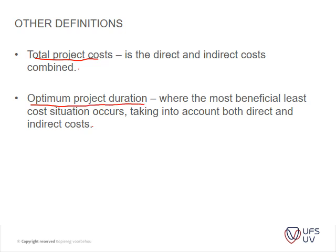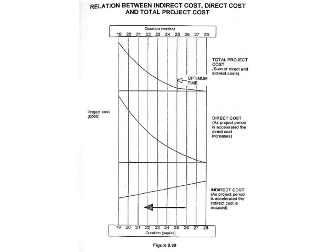We're going to look at total cost and project duration by means of an example. Basically, you've got your indirect costs and your direct costs, and if you add those together you get your total cost. Your indirect costs have a constant slope — like your daily or monthly preliminaries — while your direct costs escalate as you reduce the time needed.